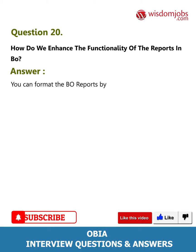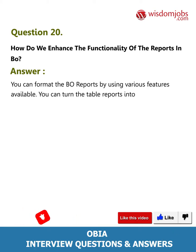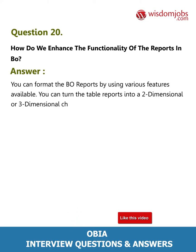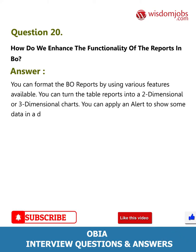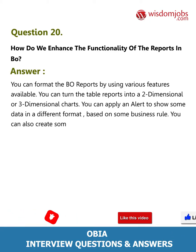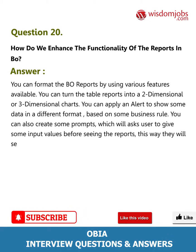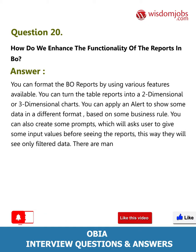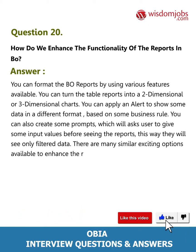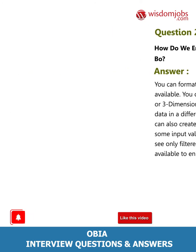Question 20: How do we enhance the functionality of reports in Business Objects? Answer: You can format BO reports using various available features. You can turn table reports into two-dimensional or three-dimensional charts. You can apply alerts to display data in a different format based on business rules. You can also create prompts that ask users for input values before viewing reports, so they see only filtered data. There are many similar options available to enhance reports.